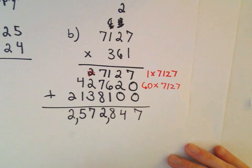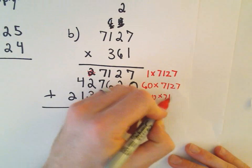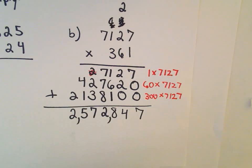And then we're doing 300 times 7,127 to get this last row. And then we're just adding all those results together.